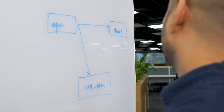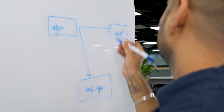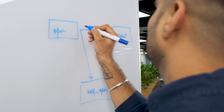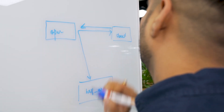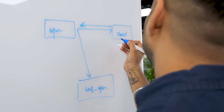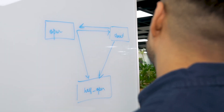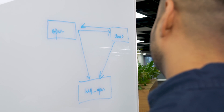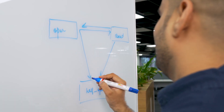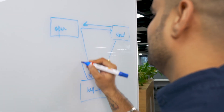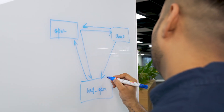Circuit breaker was implemented at Udaan using a finite state machine. It has three normal states: open, closed, and half-open. It uses a sliding window to store the outcome of calls, aggregates them, and decides to put the circuit into the required state.